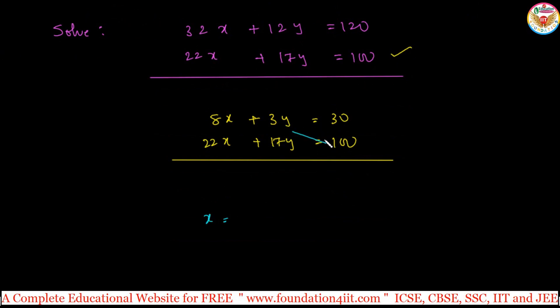If you want x value, cross 3 into 100 is 300 minus 17 into 30. 17, 3 is 51, so 510 divided by again 3 into 22 is 66 minus product of these both, 136. Just simplify and get the answer. This is minus 210 and it is minus 70, 3 is 210, x is equal to 3.